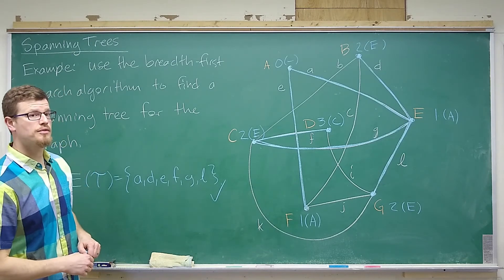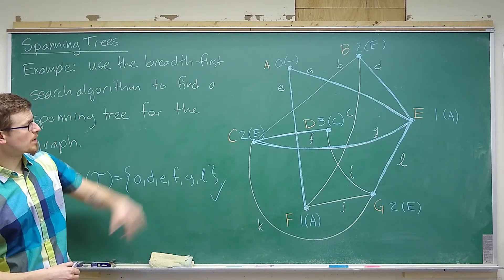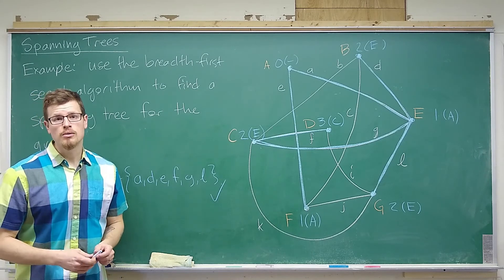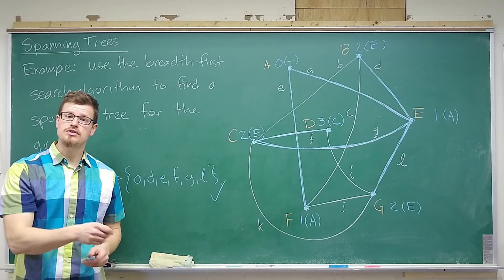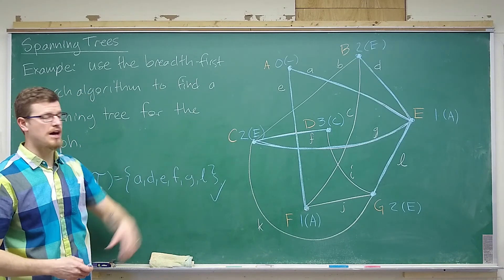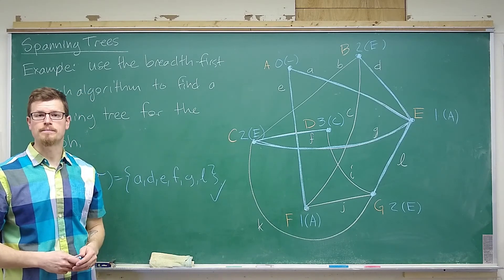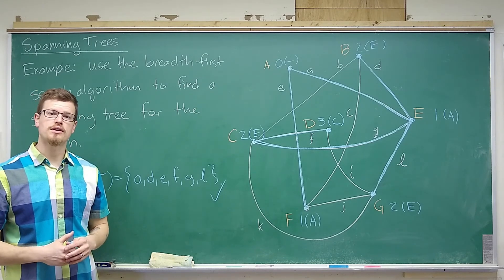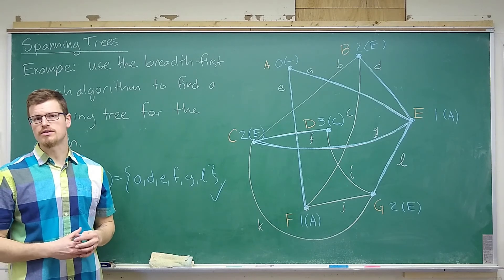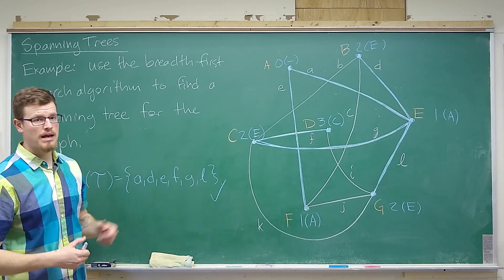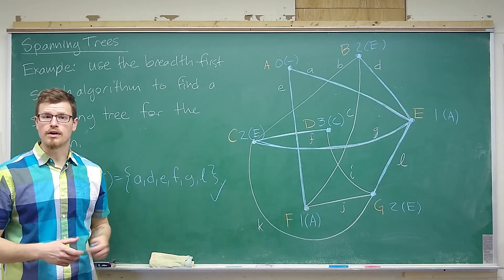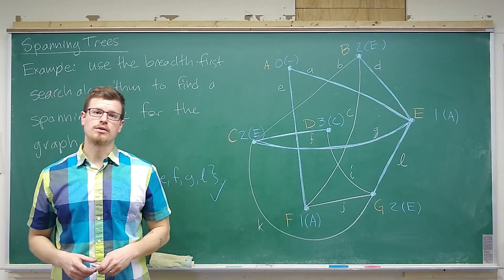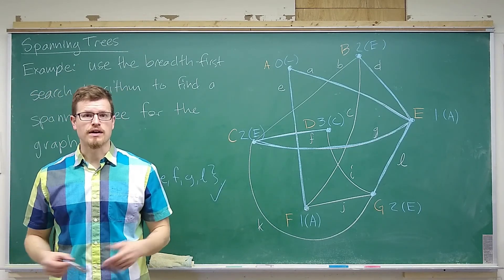Hopefully, that was a little bit helpful for you guys in understanding what a spanning tree is, as well as how to find one without having to pick edges or delete cycles. This is a very nice, methodical way in which we can find a spanning tree. We'll also consider what's called the depth first search algorithm. And that will also give us a way of identifying spanning trees for a graph. So, I'll see you guys shortly back in the workshop with another algorithm for finding spanning trees.